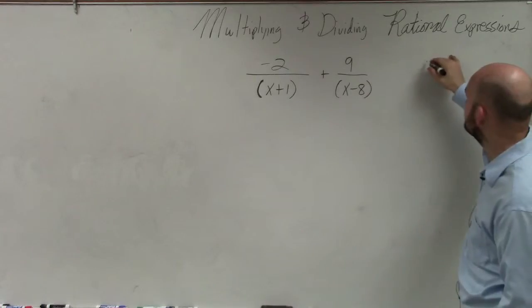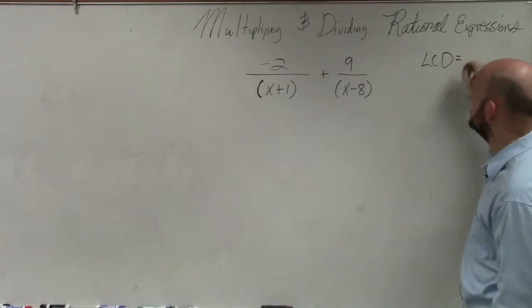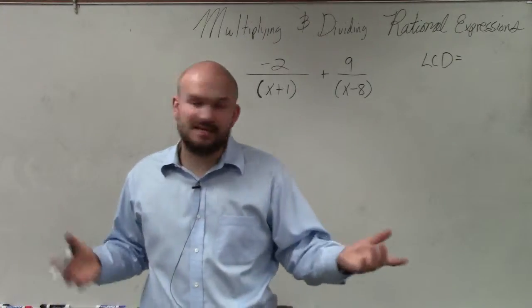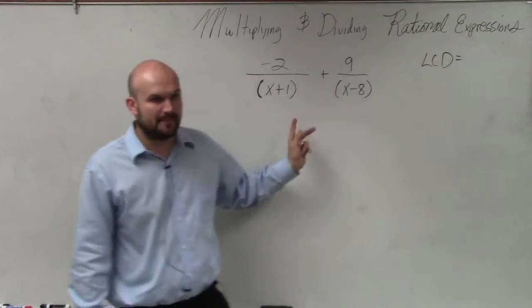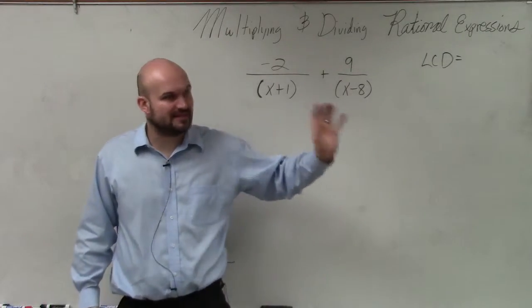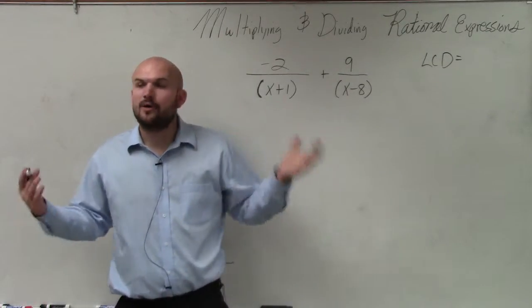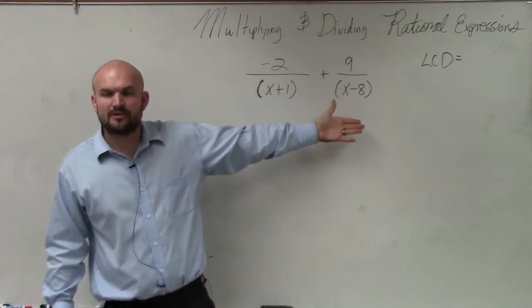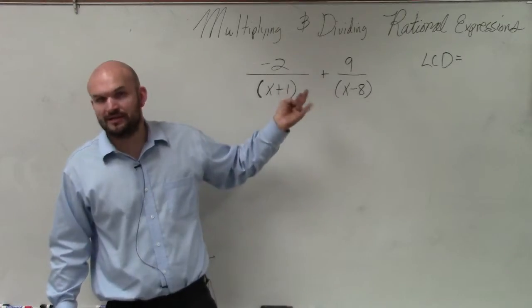What we're going to want to do first is identify the LCD. As I mentioned, the easiest way to form the LCD is to multiply your two denominators. However, I will caution you, that's not always going to be the case. When you have two denominators that are in simplified form, that more than likely is always going to be the case unless they're already the same.